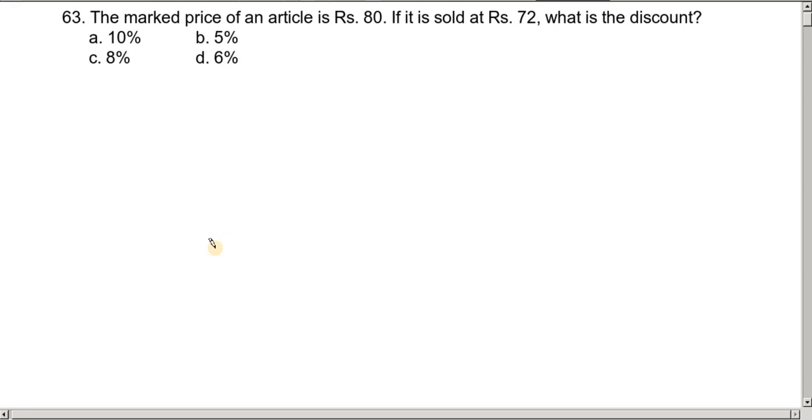This is the first question in the UB group of 2nd paper. Question number 63: The marked price of an article is Rs. 80. If it is sold at Rs. 72, what is the discount? Ten percent, five percent, eight percent, or six percent.